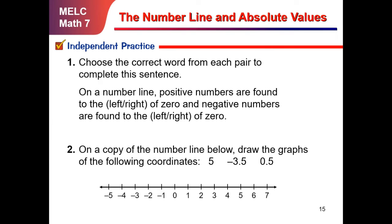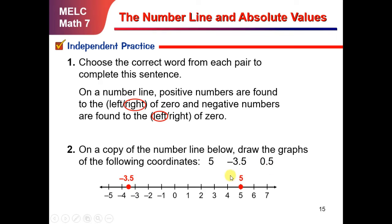Choose the correct word from each pair to complete this sentence. On a number line, positive numbers are found to the right of 0, and negative numbers are found to the left of 0. Number 2: on a copy of the number line, draw the graphs of the following coordinates. 5 — that is at positive 5. Negative three-fifths is between negative 3 and negative 4, so it should be placed there. And 0.5 — since it is positive, it is between 0 and 1, so it would be placed in that position.